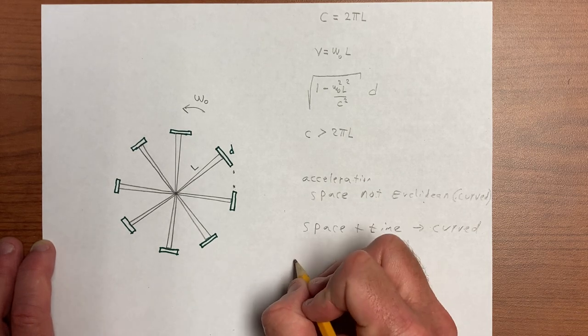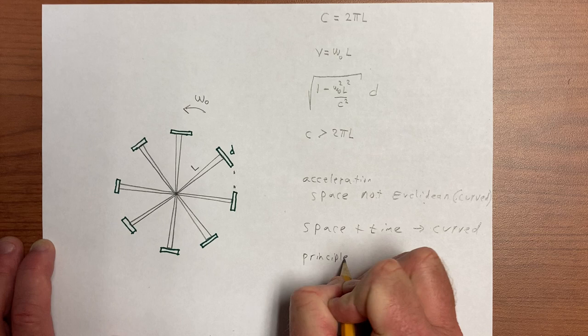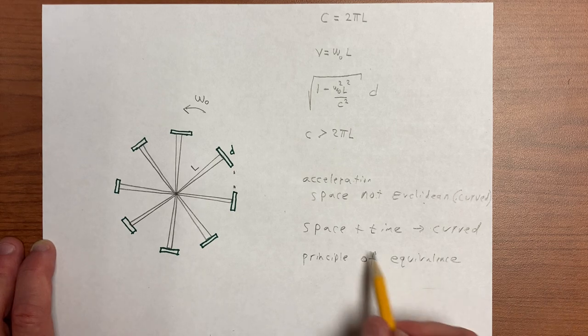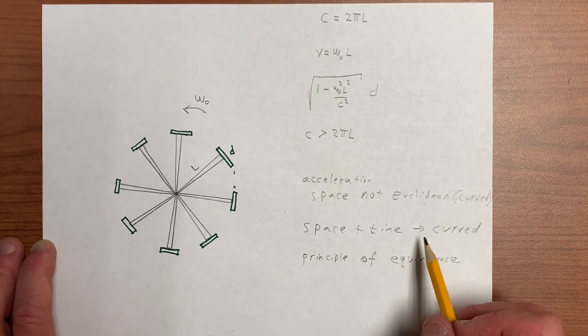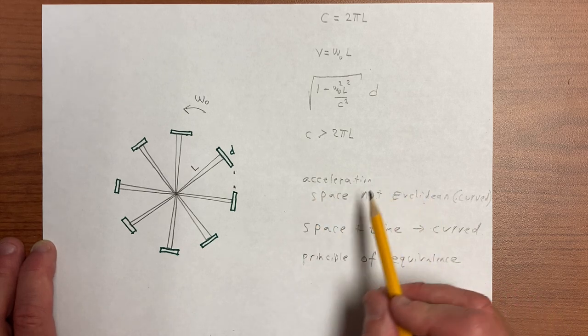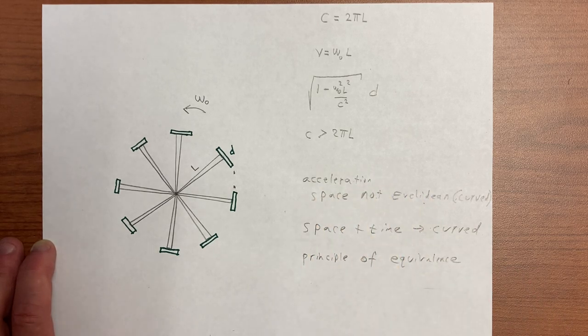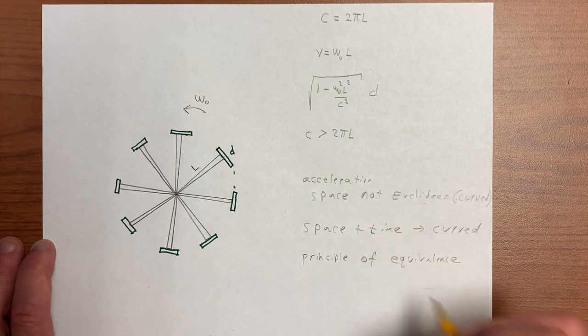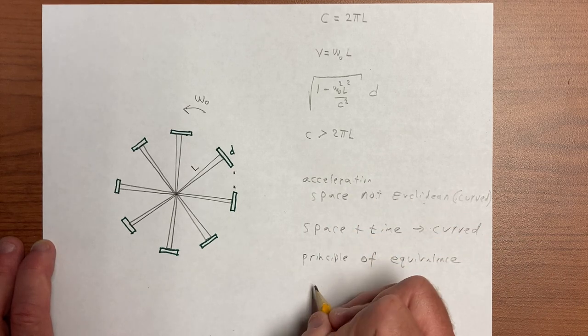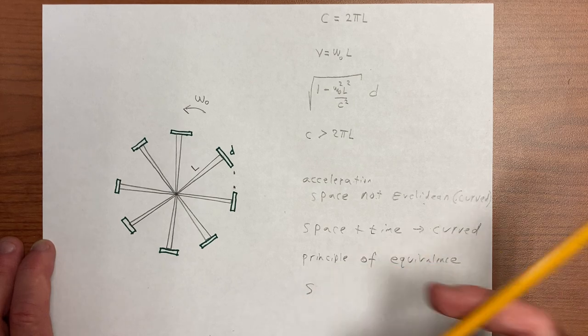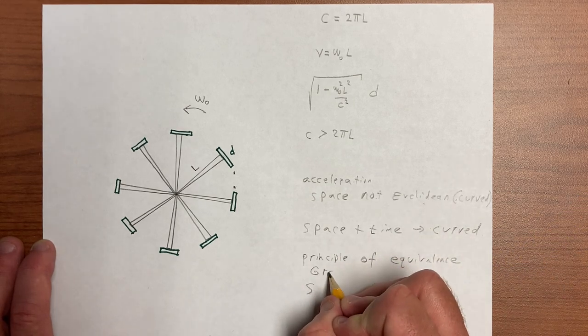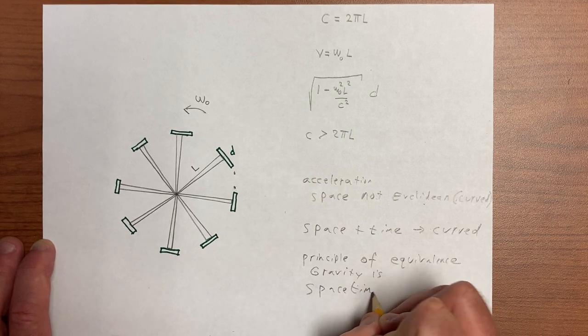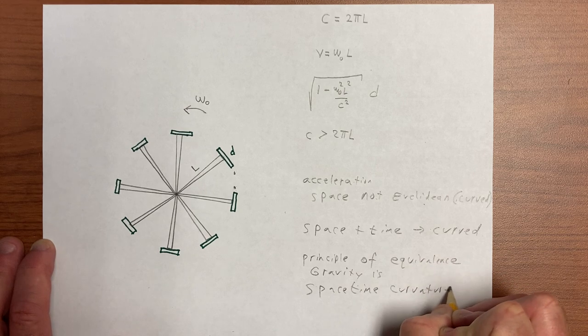And then we're going to look at the principle of equivalence, which will suggest to us that there's something very similar about an accelerated frame and a frame in which there's gravity. And that equivalence will then allow us to transfer this conclusion and to get to general relativity, where we say that gravity is space-time curvature.